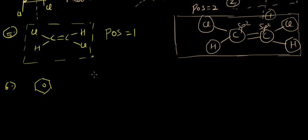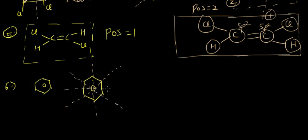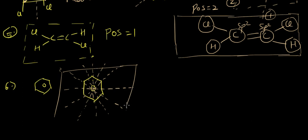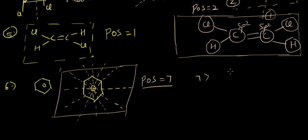In the sixth example with benzene, the planes of symmetry include one here, one here, two here, three, four, five, and six through the ring axes — plus a seventh horizontal plane that cuts all carbon and hydrogen atoms into two parts. Total planes of symmetry in benzene are seven.